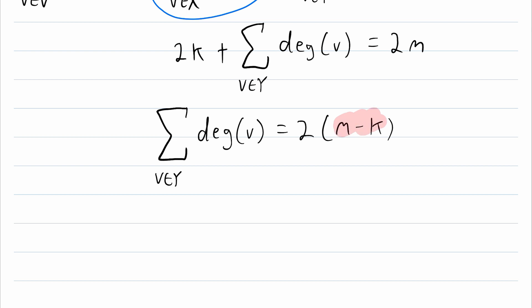M minus K is an integer. So, this, by definition, is an even number. So, when we add up all of the odd degrees of our graph, we get an even number.